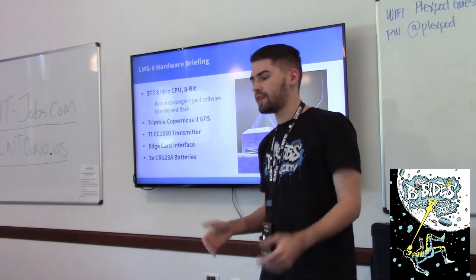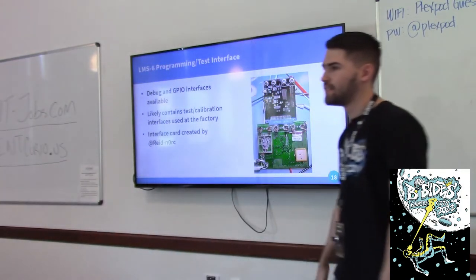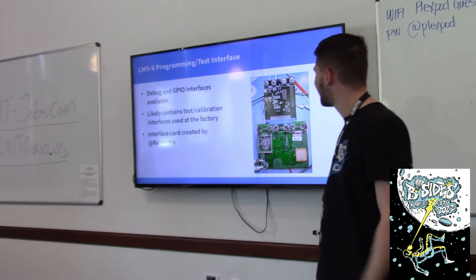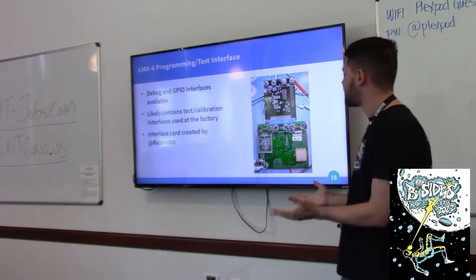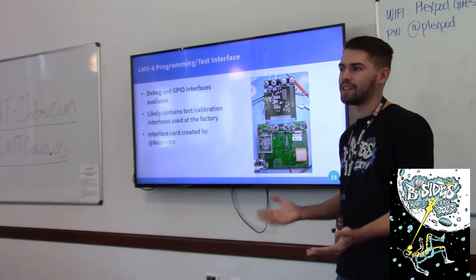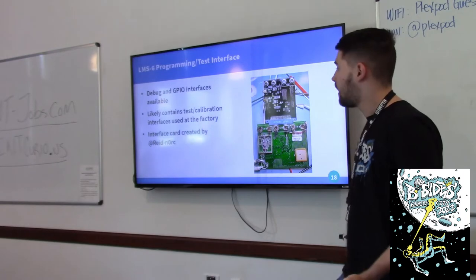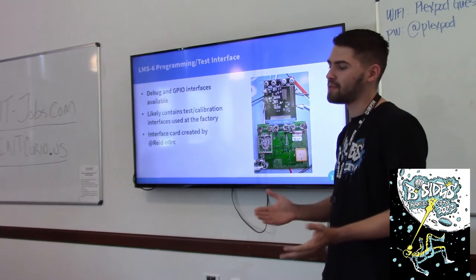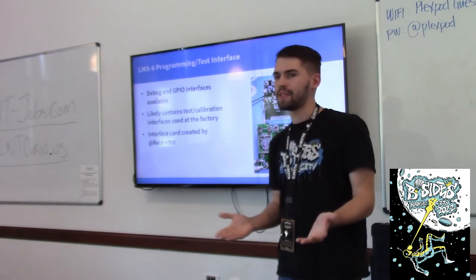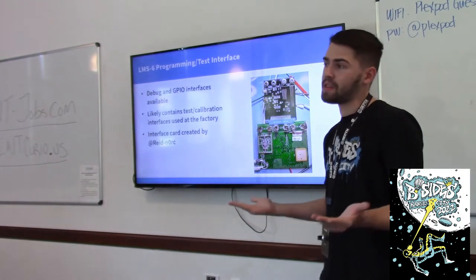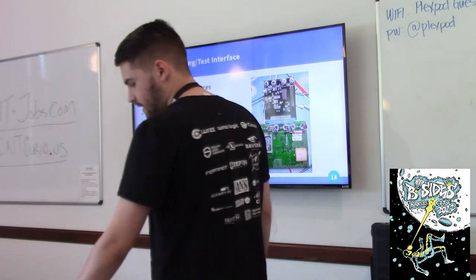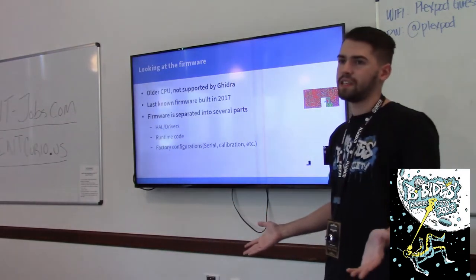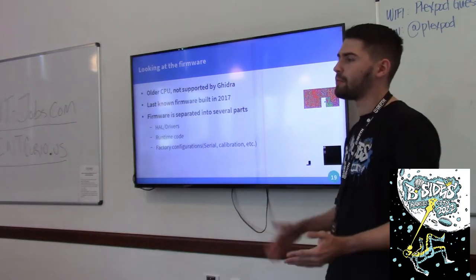For programming this one, you basically have to use an Edge interface, developed by our guy Reid over here. The Edge connector provided test and calibration interfaces to assist development and QA for this weather balloon. In order to program it, we had to build out a header and connect it to an ST7 flasher. This one was actually the easiest to dump the firmware — there was no readout protection, so we were able to dump and modify the firmware.